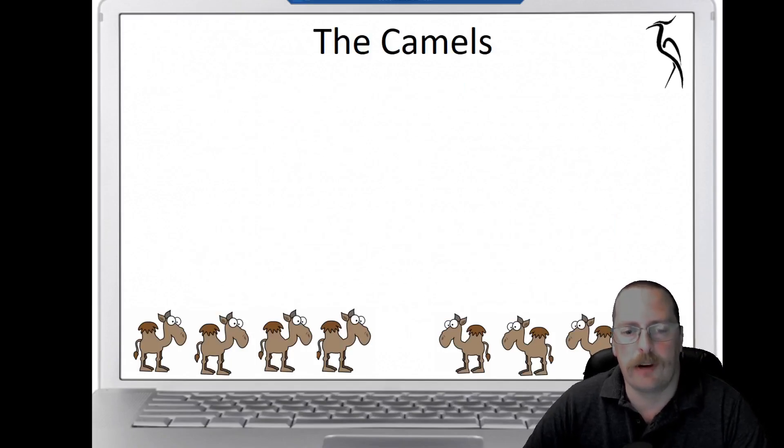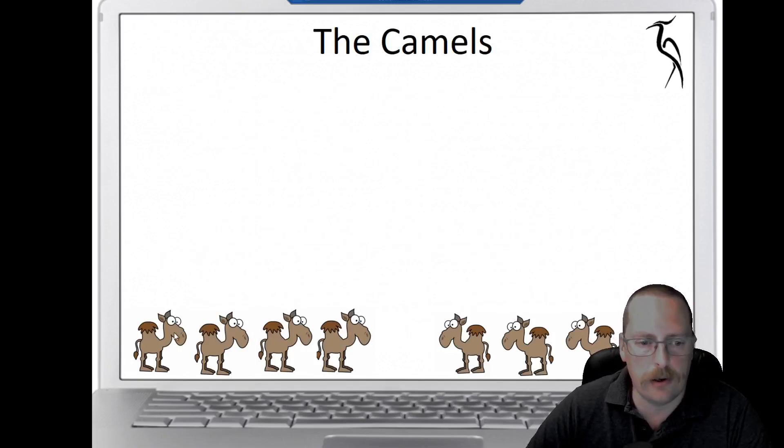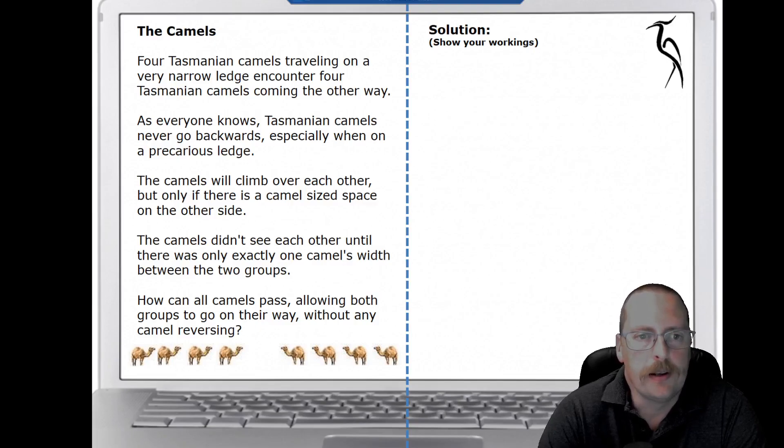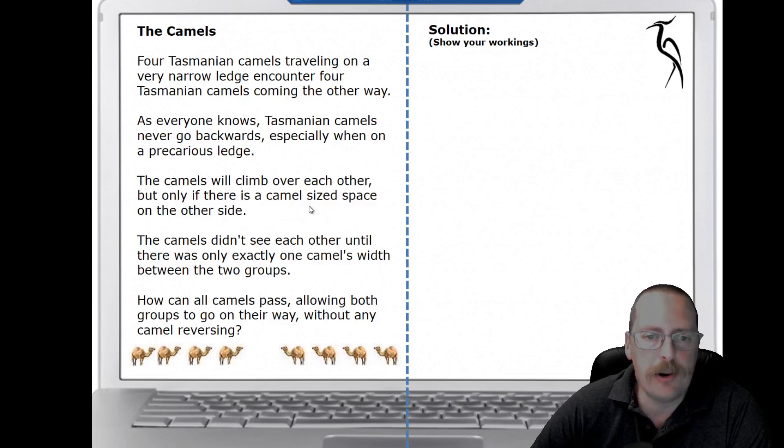I've now got a second problem for you to have a go at, and these are Tasmanian camels. Tasmanian camels can only walk forward, but what they can do is they can climb over another camel. Four Tasmanian camels traveling on a very narrow ledge encounter four other Tasmanian camels coming the other way. Tasmanian camels can never go backwards, especially on a narrow ledge because they will fall off.